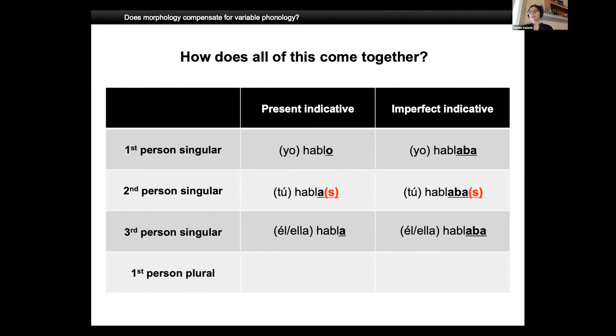A functional hypothesis would predict that a pronoun would be more likely to be used in such instances of deletion to retain the important information about person and number. With the example of the first person plural of hablamos in the present and hablábamos in the imperfect, that is not the case. Because even when S is deleted and hablamos becomes hablamo and hablábamos becomes hablábamo, it is still phonetically distinct from all other verb forms conveying the meaning of different persons. So no information is lost when S deletion occurs.